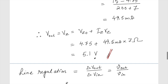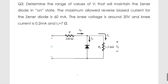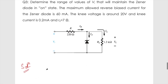The third problem: determine the range of input voltage vi that will maintain the Zener diode in the on state, meaning in the breakdown region. The maximum allowed reverse current is 60 milliampere, the knee voltage vz_k is 20 volts, the knee current is 0.2 milliampere, and rz is 7 ohms. The load resistance RL is 1.2 kilohms.